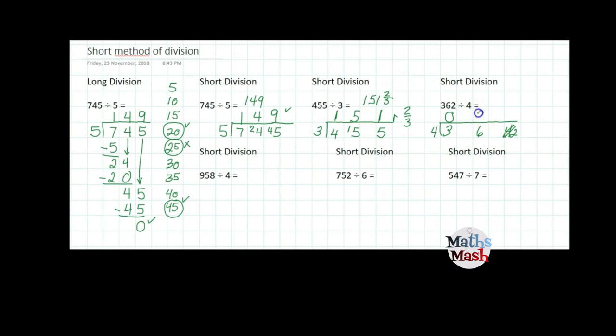How many sets of 4 in 36? That's 9 with no leftovers. And now I say how many in 2? That's none. So I have an answer of 90, remainder 2 quarters or 1 half. So my answer is 90 and remainder 1 half.